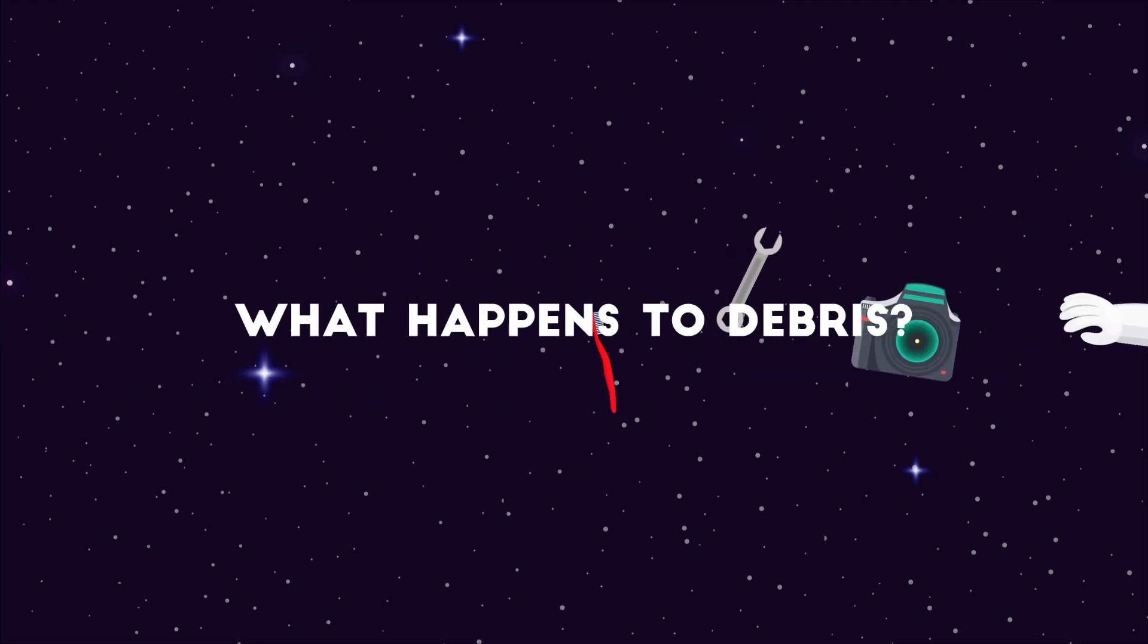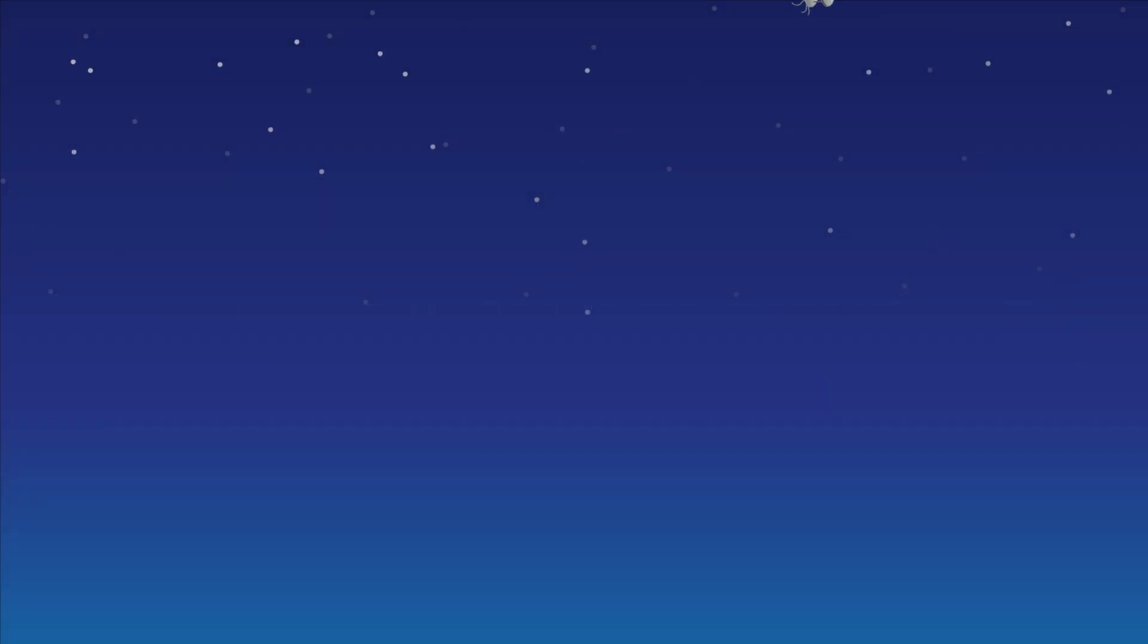But what happens to this debris? Objects usually remain in orbit for a few years until they re-enter the Earth's atmosphere. Most burn up in the atmosphere, however larger objects can reach the ground.